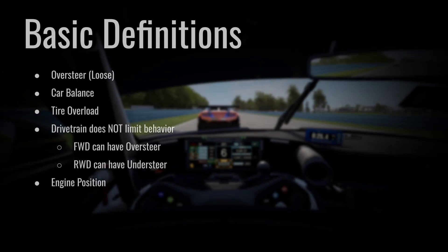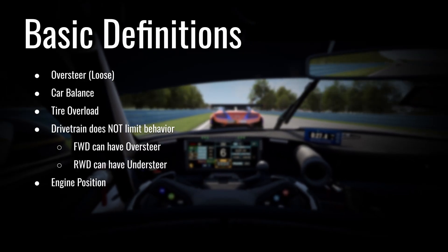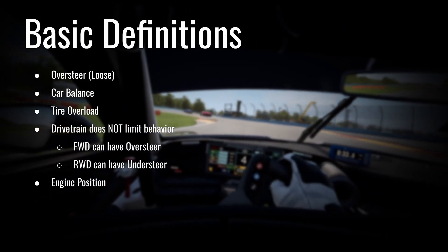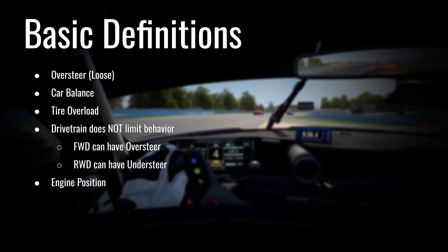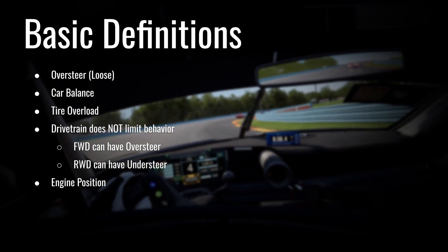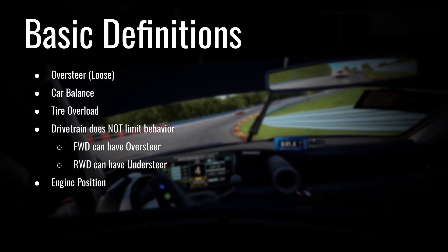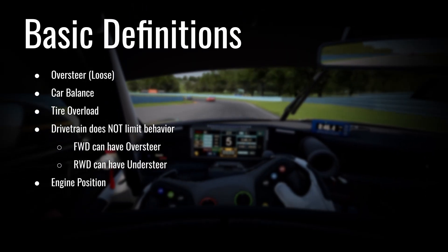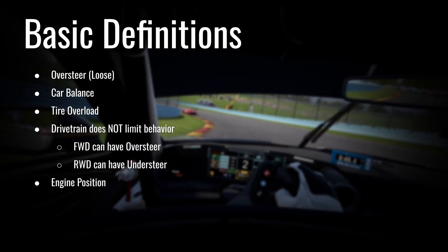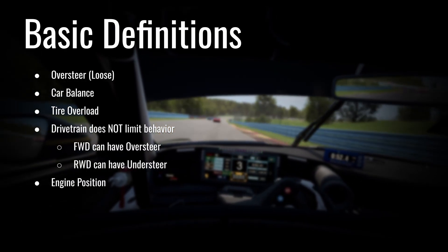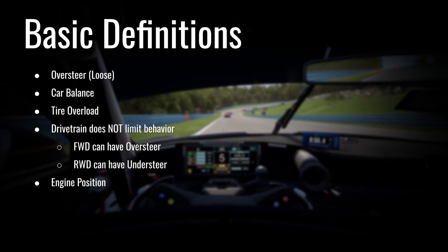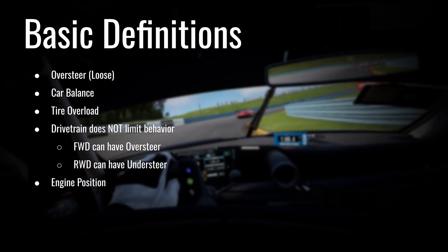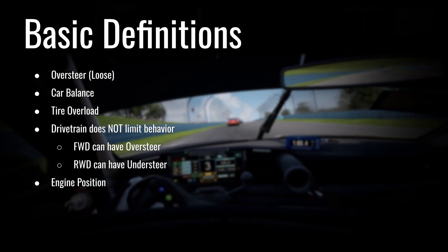Let's go over some basic definitions for oversteer. Oversteer — or 'loose' for Americans — is when the rear tires lose grip before the front tires, which leads to the car rotating from the rear and losing traction there. The most common example is power-out oversteer, where you're spinning up the tires and drifting the car out of the corner. But oversteer can occur in many different parts of the corner, so we need to take a deeper dive into what actually causes it so you can avoid it through all phases.